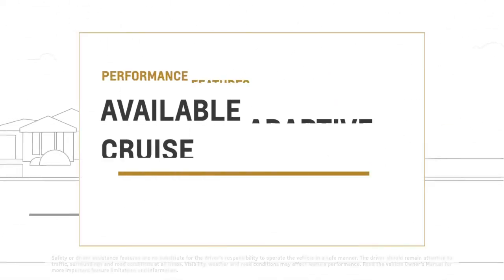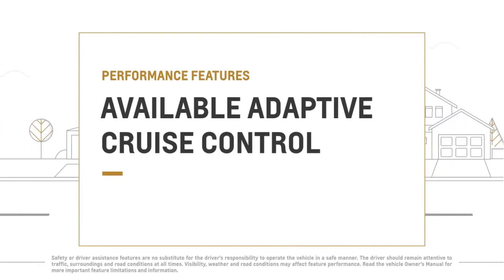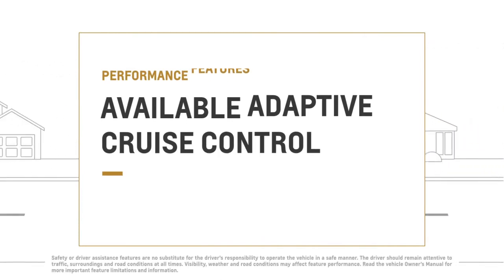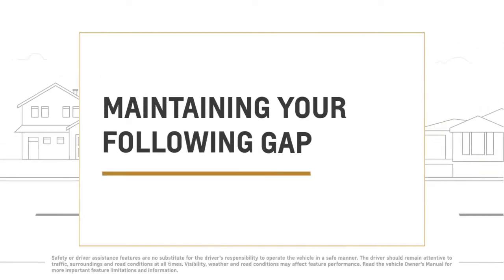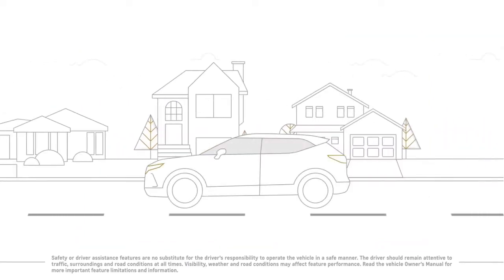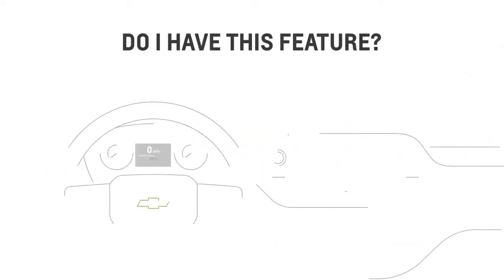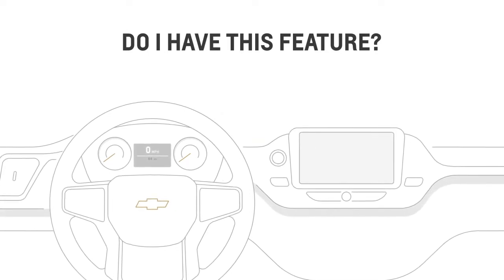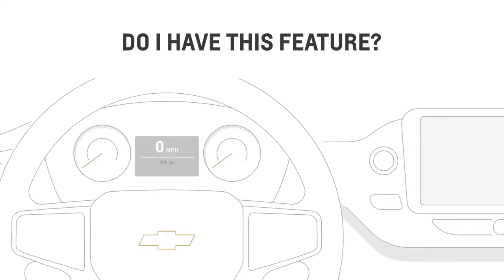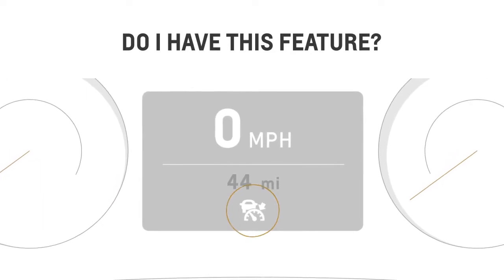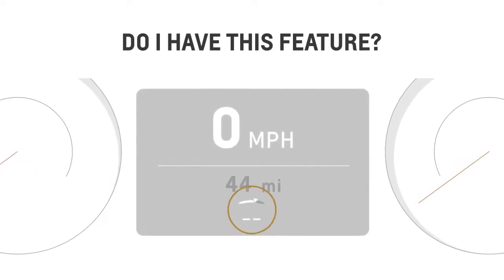Available Adaptive Cruise Control is designed to help you maintain a driver-selected following gap from the detected vehicle you're following. If your vehicle has this feature, you'll see the Adaptive Cruise Control icon in your driver information center that looks like this, or like this.